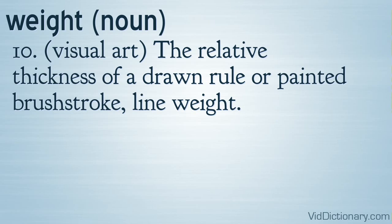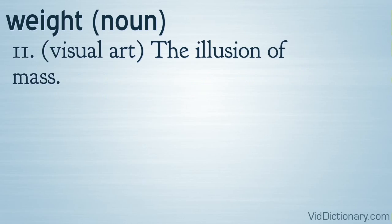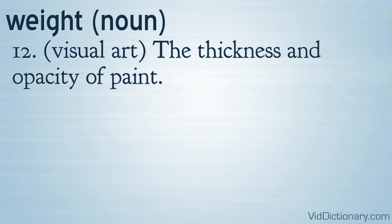Definition 10: Visual art — the relative thickness of a drawn rule or painted brush stroke; line weight. Definition 11: Visual art — the illusion of mass. Definition 12: Visual art — the thickness and opacity of paint.